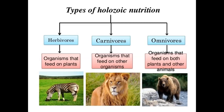Organisms that feed on plants are herbivores. Organisms that feed on other organisms rather than plants are carnivores. And organisms that feed on both plants and other animals are omnivores.